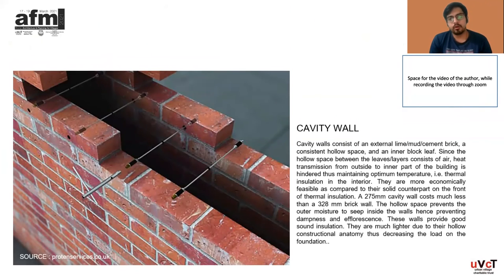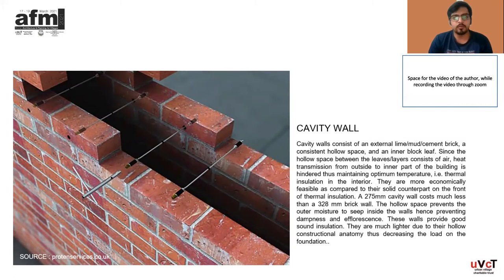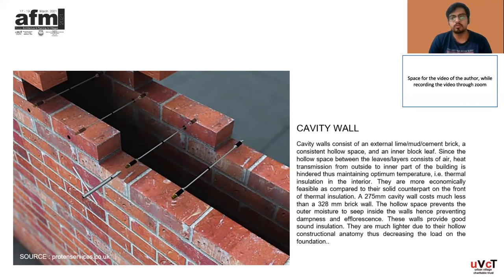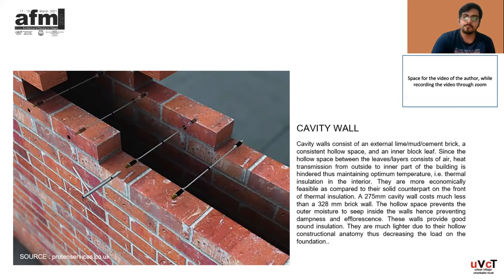Cavity walls consist of an external leaf of lime, mud, cement, or brick, a consistent hollow space, and an inner block leaf which is the same as or slightly different from the external leaf. Since the hollow space between the leaves consists of air, heat transmission from outside to the inner part of the building is hindered, thus maintaining optimum thermal insulation in the interior. They are more economically feasible compared to their solid counterparts. A 275 mm cavity wall costs much less than a 328 mm brick wall. The hollow space also prevents outer moisture from seeping inside the wall, hence preventing dampness. These walls provide good sound insulation and are much lighter, thus decreasing the load on the foundation.